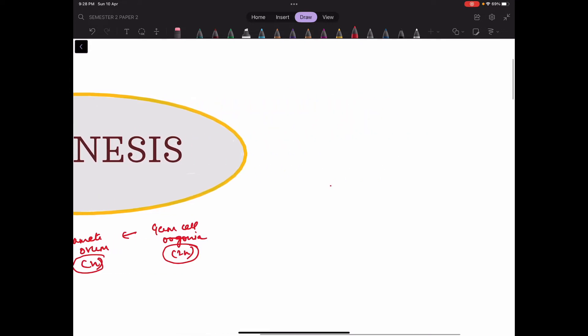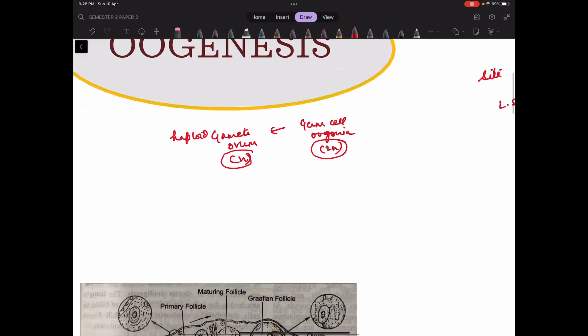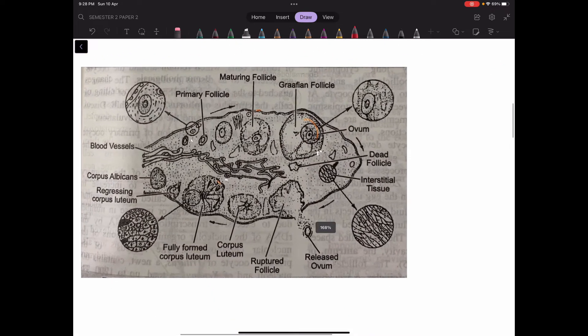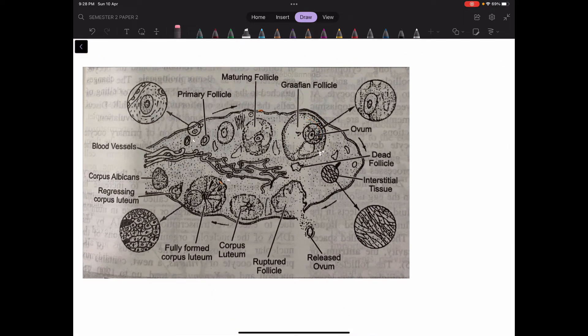Now where does oogenesis occur? What is the site? It occurs in ovary. If we take the longitudinal section of ovary, it will look something like this. If you see the ovary, basically this lining here.